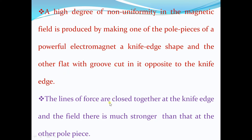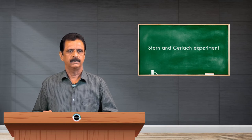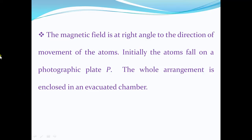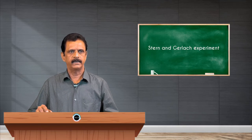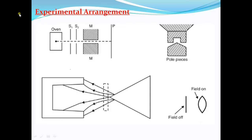The magnetic field is at right angles to the direction of movement of the atoms. The direction of motion of the atomic magnet is in the positive x-direction, and the magnetic field is in the vertical direction, taken as the z-direction. The whole arrangement is enclosed in an evacuated chamber. This completes the description of the experimental arrangement and the shape of the pole pieces of the electromagnet.